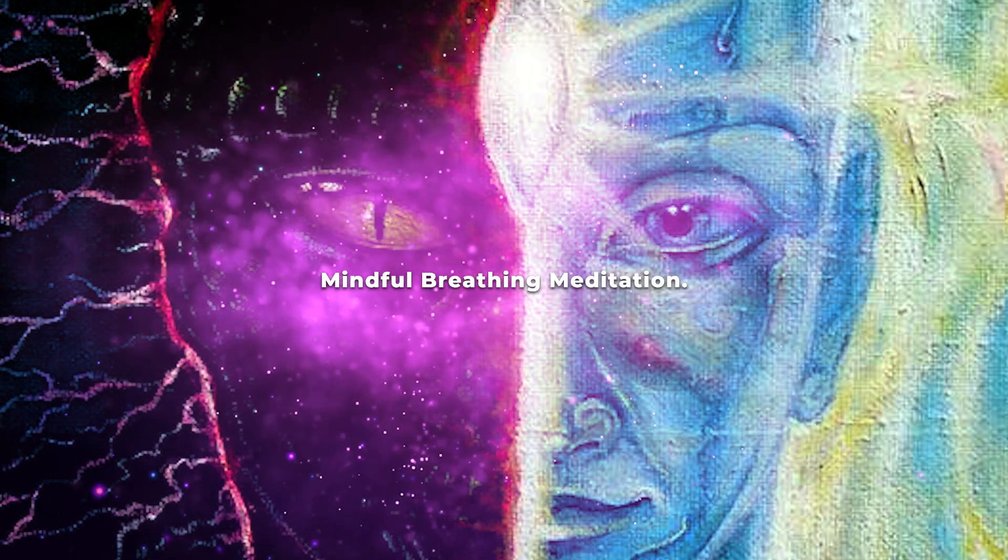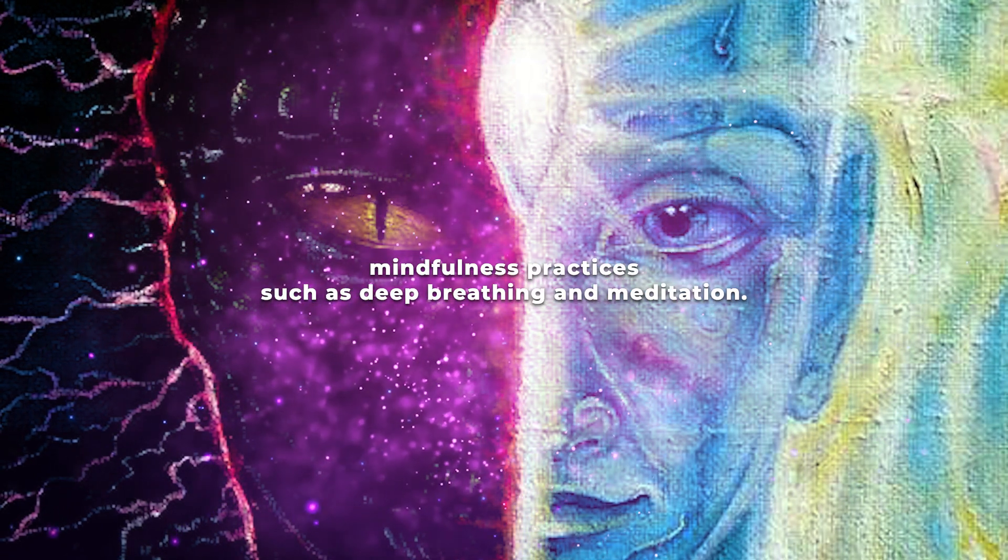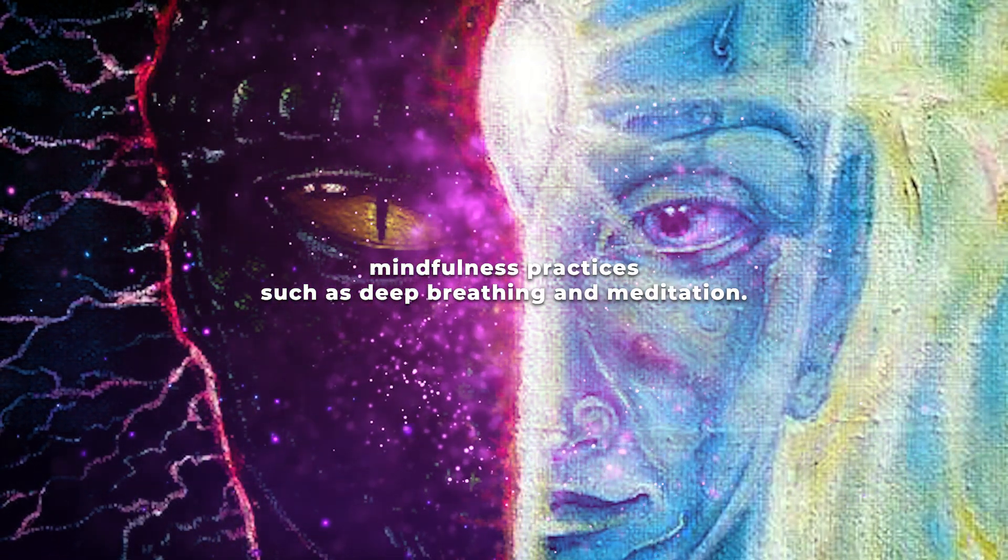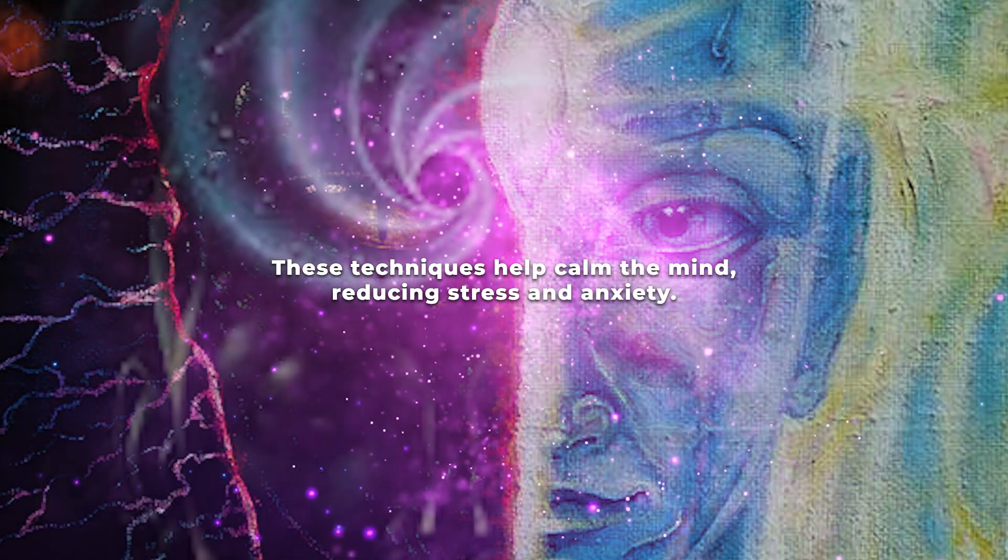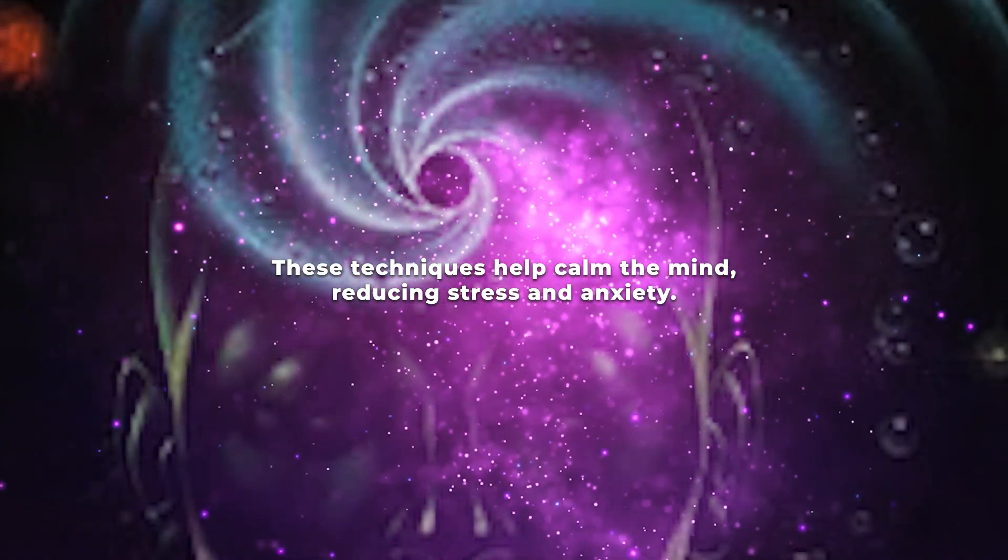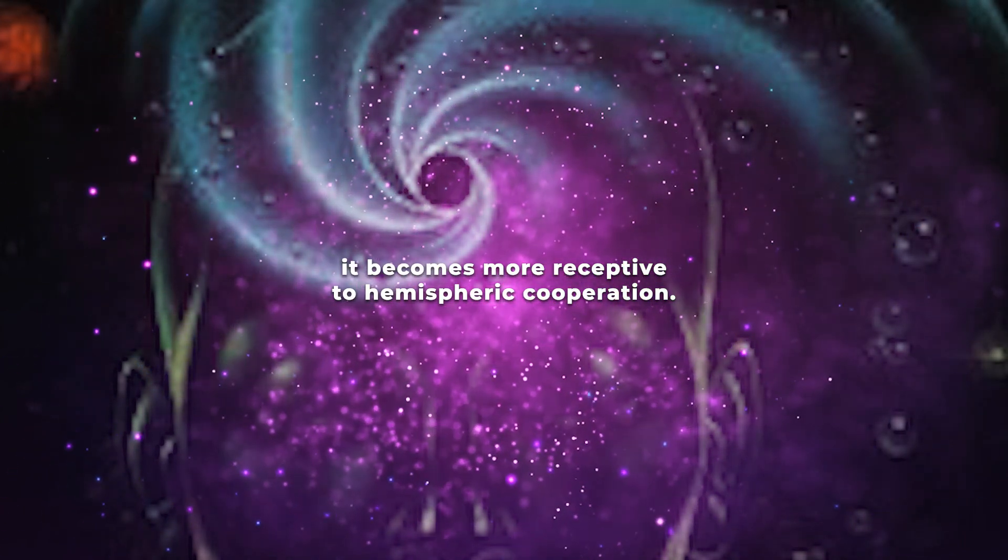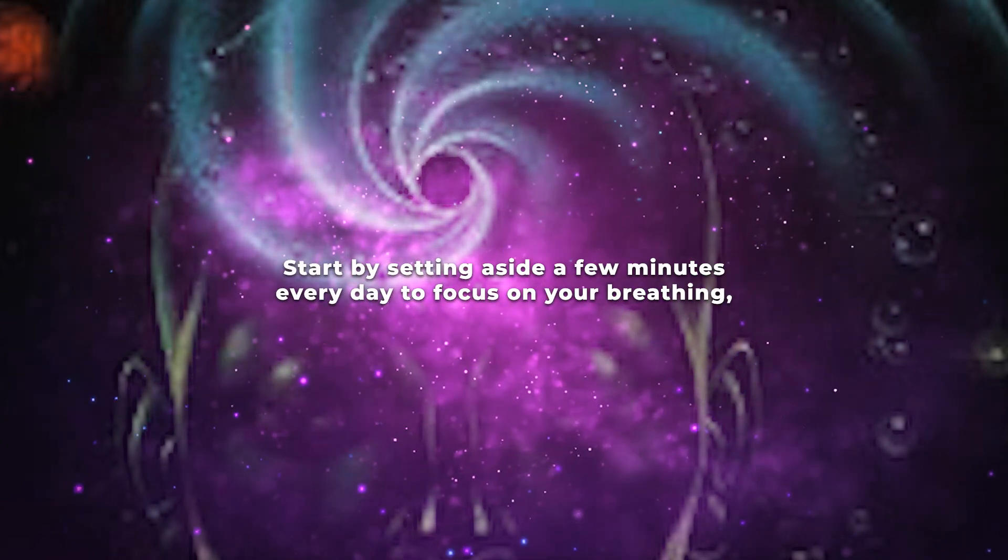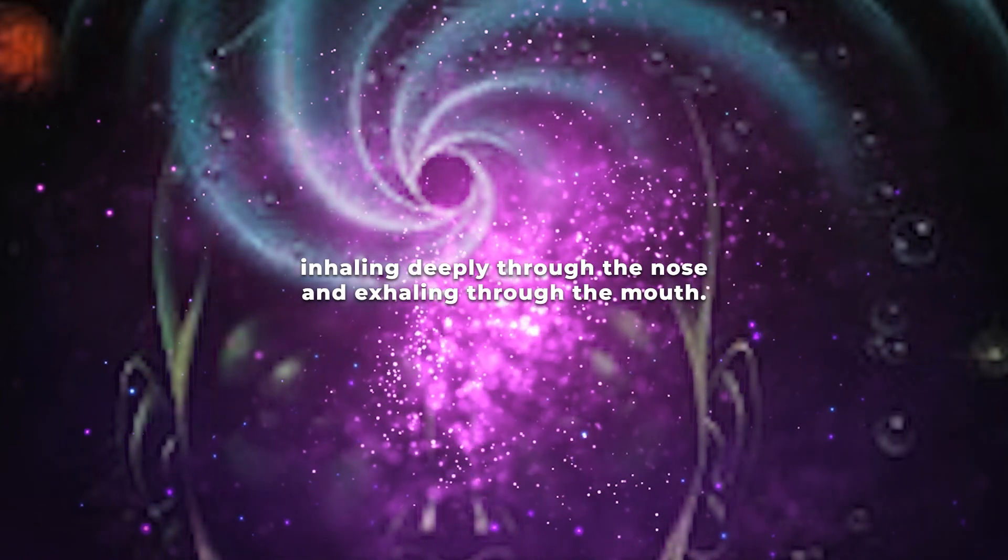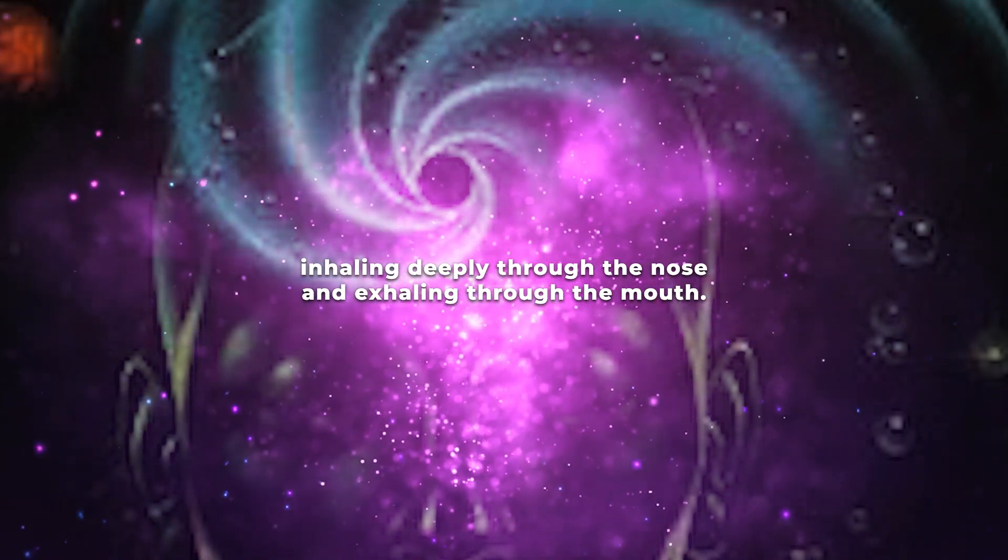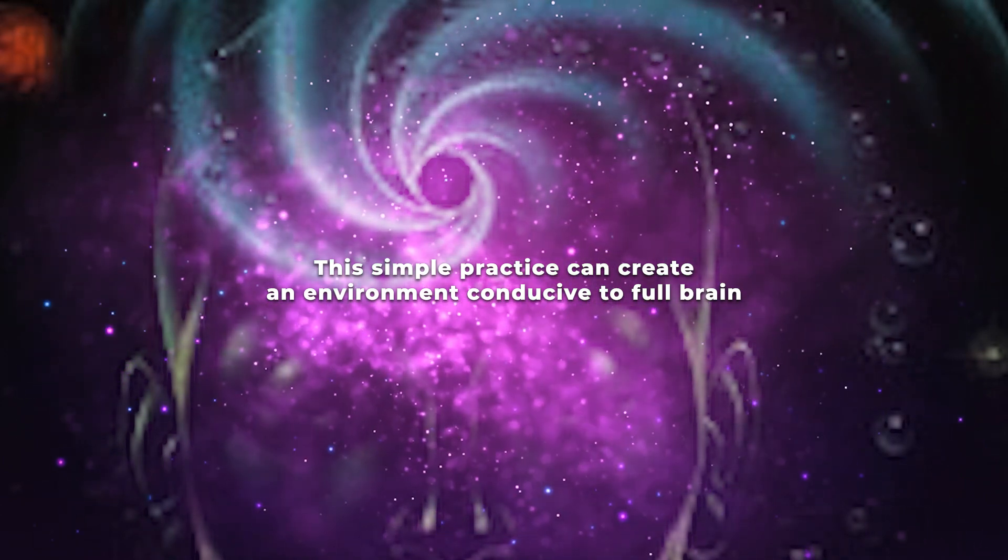A powerful way to encourage brain synchronization is through mindfulness practices such as deep breathing and meditation. These techniques help calm the mind, reducing stress and anxiety. When your brain is in a relaxed state, it becomes more receptive to hemispheric cooperation. Start by setting aside a few minutes every day to focus on your breathing, inhaling deeply through the nose and exhaling through the mouth. This simple practice can create an environment conducive to full brain engagement.